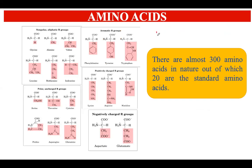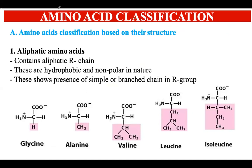There are 20 standard amino acids, but in total there are 300 amino acids that exist in nature. We will be talking about the 20 standard ones in detail. These amino acids have been classified into different categories on certain criteria. The first classification is based on structure, which helps us categorize the amino acids and understand their nature a little better.